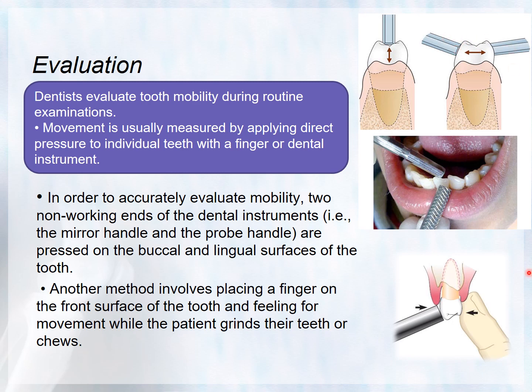Another method is to use a finger on the labial surface of the tooth and feel for movement while the patient grinds their teeth or bites. You can also use a finger on one side and an instrument on the other. For vertical movement, one handle of an instrument can be used on one side.